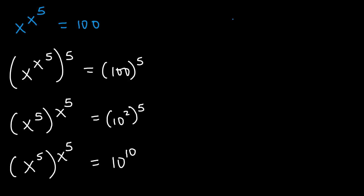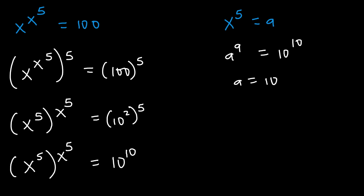At this point we can let x to the power of 5 be equal to any variable — let's say a. So this will become a to the power of a equaling to 10 to the power of 10. And if we compare both sides, we can see that a equals 10.